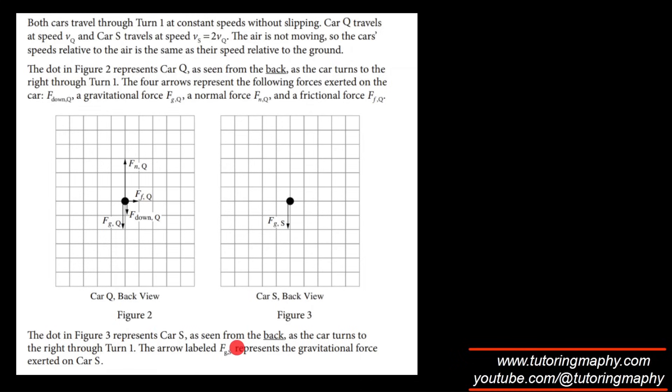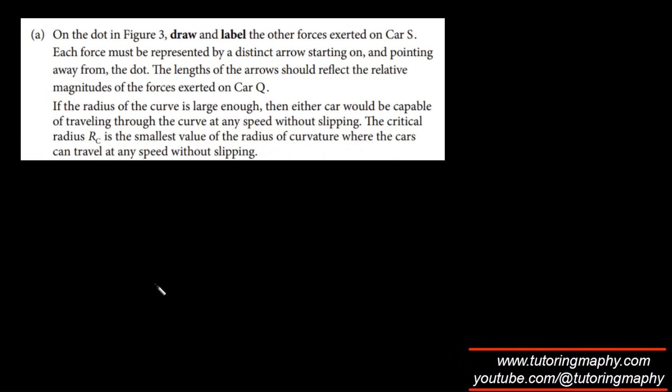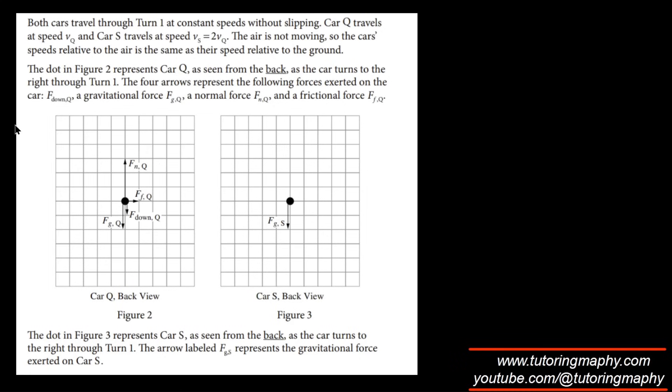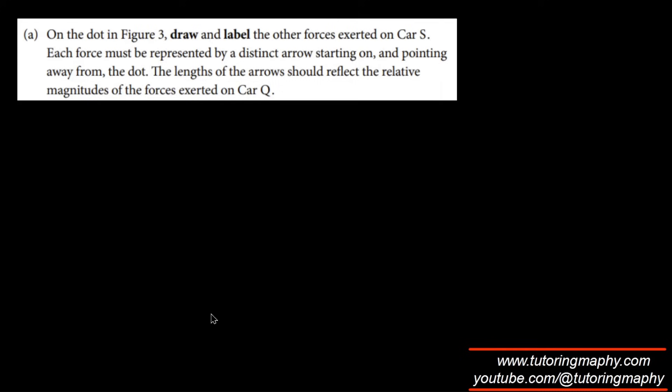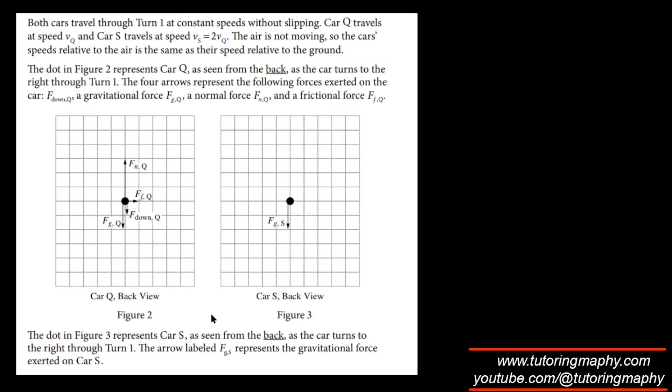Now the dot in figure 3 represents S as seen from the back as the car turns to the right through turn 1. The arrow labeled F_GS represents the gravitational force exerted on car S. Now on figure 3, draw and label the other forces exerted on car S. Each must be represented by a distinct arrow pointing away from the dot. The length of the arrow should reflect the relative magnitudes of the car exerted on Q. Which means that we have to take Q as a reference and then draw on S.